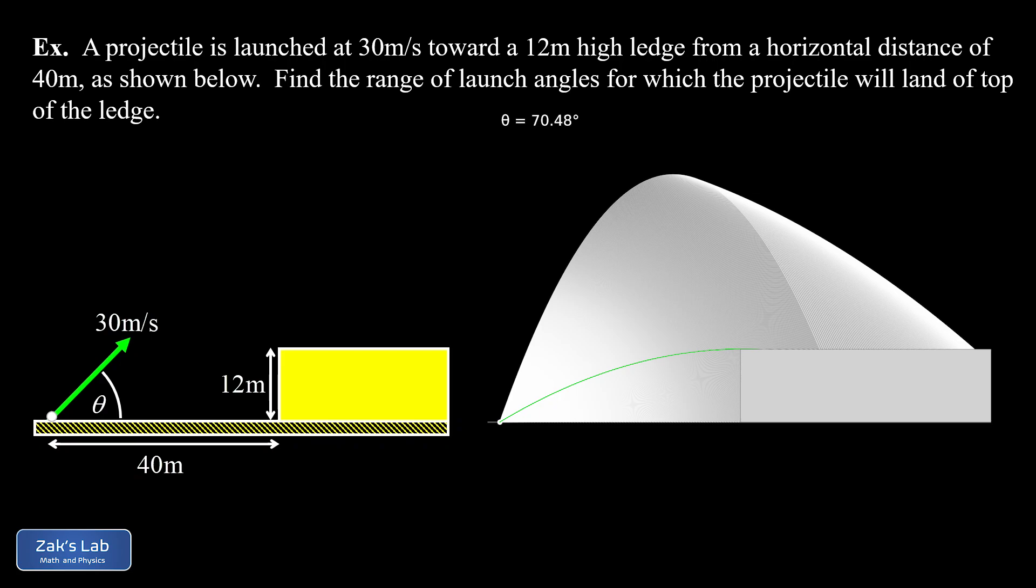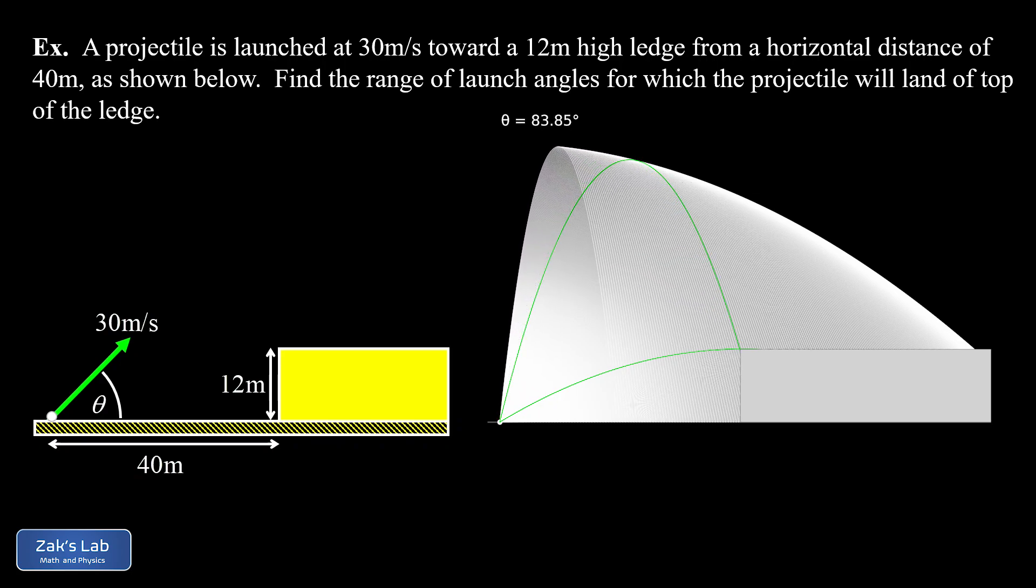This is the cut line where any angles bigger than this are going to send the projectile back down and hit the face of the ledge or hit the ground all the way to the left of the ledge. So this was the key visualization to the problem.